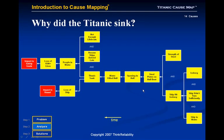Even more detail can be added to the cause map. The loss of 1,500 lives was because of the people in the water — they either died of hypothermia or they drowned — because the Titanic sank, there were not enough lifeboats, and the rescue ships arrived late. From a risk management standpoint, this map shows it is possible for the Titanic to sink and not lose anyone if the lifeboats had worked effectively and the rescue ships had arrived earlier. Both of those reduce the risk of loss of life.